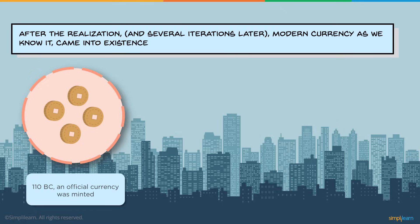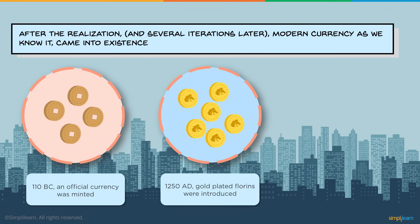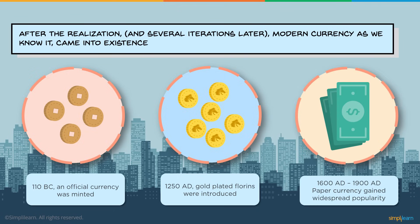After realizing that the barter system didn't work very well, currency went through a few iterations. In 110 BC, an official currency was minted. In 1250 AD, gold-plated Florin was introduced and used across Europe. And from 1680 to 1900 AD, paper currency gained widespread popularity and was used across the world. This is how modern currency as we know it came into existence.